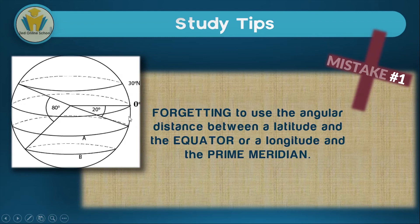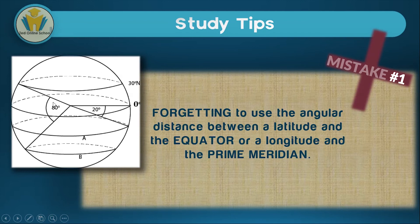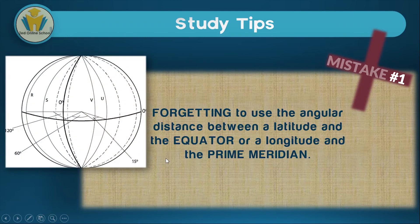Now, how do we work out B? This is where the mistake usually comes in. Most people will take the 80 degrees as the angular distance for latitude B. However, you should note that in the angular distance given, there's already a 30 degrees included for the latitude 30 degrees north. Therefore we need to subtract it from the 80, giving us the angular distance for B as 50 degrees south. The same applies for longitudes. If you are asked to find longitude U, we've been given angles of 120 degrees, 60 degrees, and 15 degrees. The angular distance for longitude U is not 15 — it's actually 60 plus 15, giving us 75 degrees east.